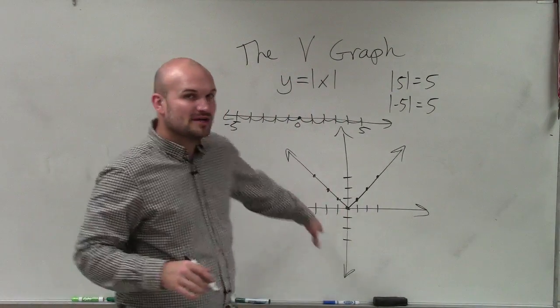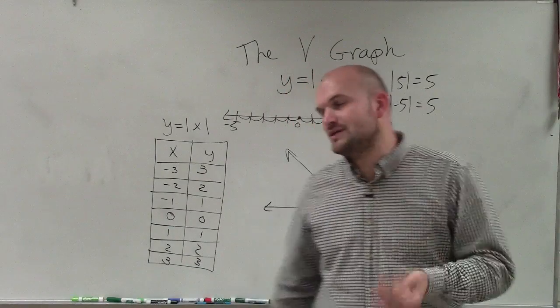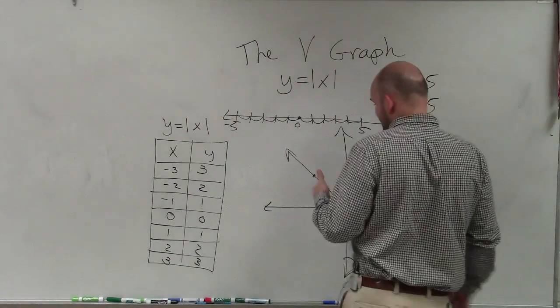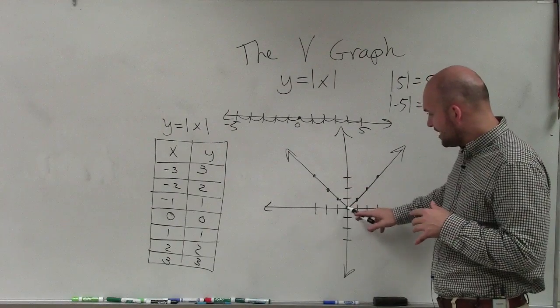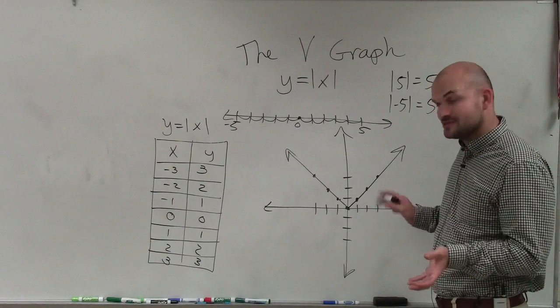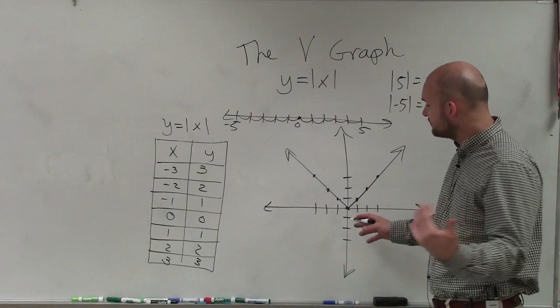And you can see, this is what we call the parent graph. Now it's very important to understand a couple of things about the parent graph. Real quick, first of all, notice that at the parent graph, at 0, 0, it kind of rebounds. And that's what we call our vertex, which I'll go over more later.